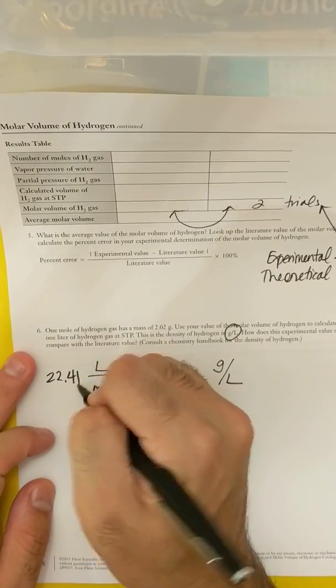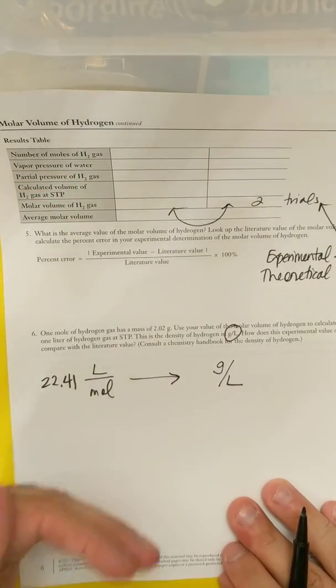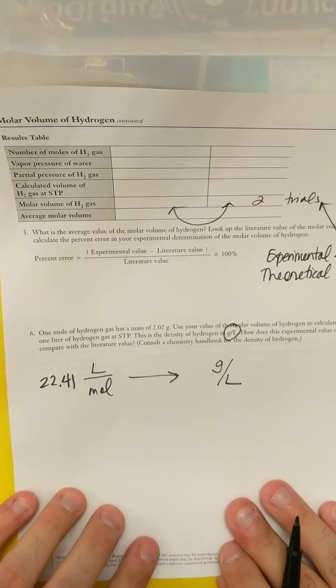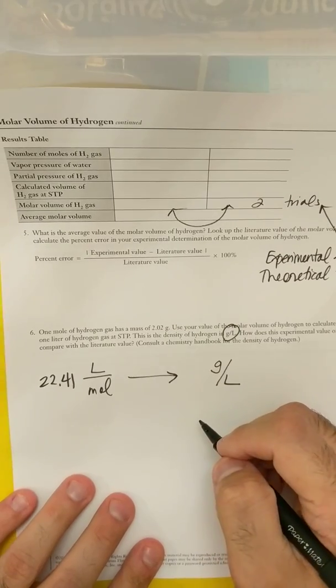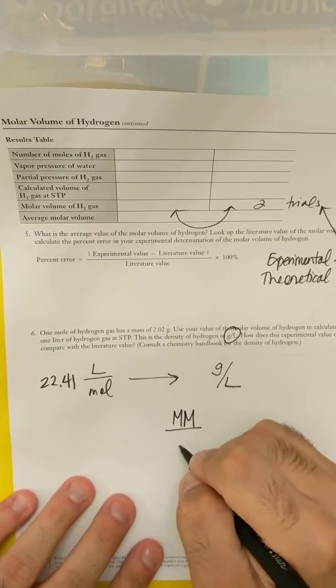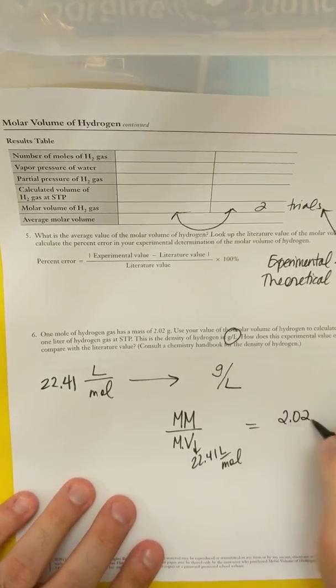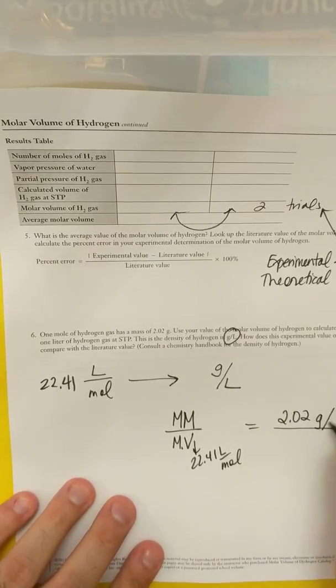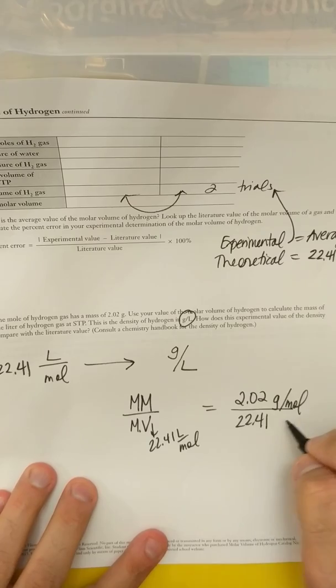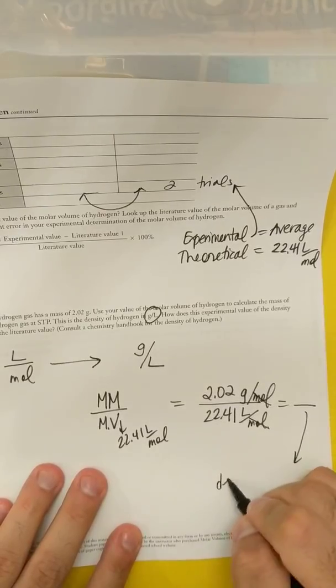So let's say my number was 22.41. In order for me to get liters on the bottom and moles on the top, I'm going to have to flip this number or divide by 22.41. And then I have this 2.02 grams. So what you're going to do is you are going to take the molar volume and divide it by the molar mass. So in order to get the density, it's going to be molar mass divided by the molar volume, which is 22.41 liters per mole. So basically, it's going to be 2.02 grams per mole divided by 22.41 or whatever value you get. And guess what? My moles cancel out.